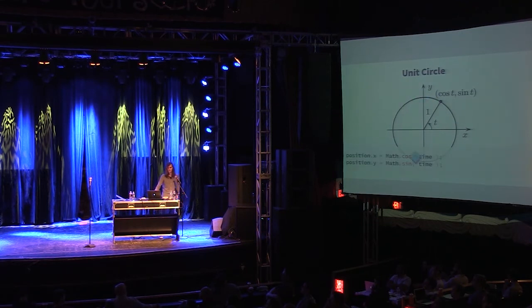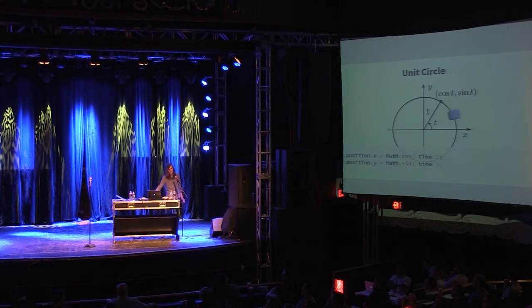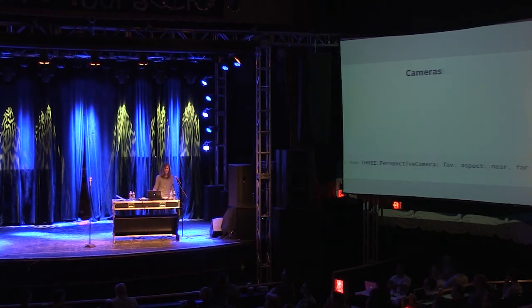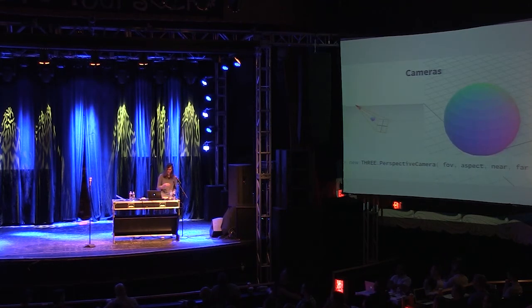The x position would be the cosine of the angle, and the y position would be the sine of the angle. So let's talk about cameras. There are two types of cameras in Three.js: the perspective and the orthographic camera.